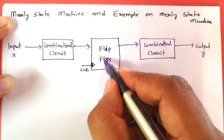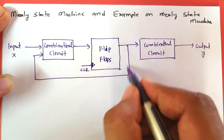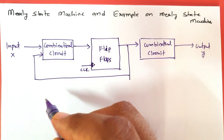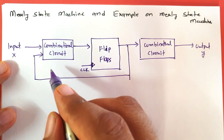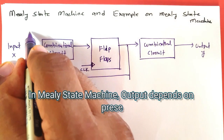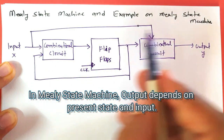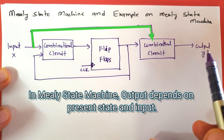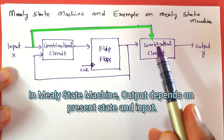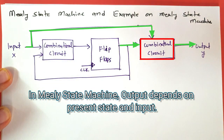The feedback from the flip-flop output back to the combinational circuit shows that the next state depends on the present state and input — same as Moore State Machine. The key difference in the Mealy State Machine is that output Y depends on the present state as well as the input. So the input is also given to the combinational circuit for generating output Y. In Moore State Machine, output does not depend on input — it only depends on present state. In Mealy State Machine, output Y depends on both present state and input.